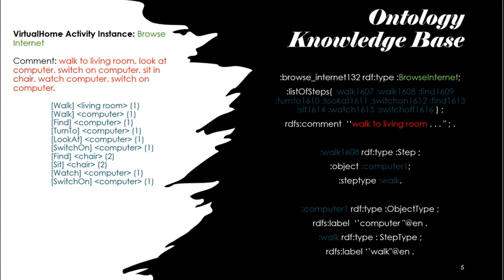Each step is connected with an object — a computer in this case — and an action, as we can see here. The additional knowledge added in our ontology was to give a natural language label for each object and for each action, which would be more intuitive to return as an answer.